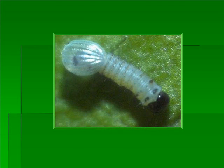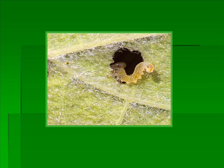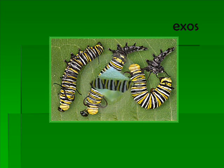Stage two is the larva stage. The larva hatches from the egg. Butterfly larva are called caterpillars. Caterpillars spend most of their time eating. Once they hatch, they eat their egg first. Butterflies do all of their growing when they're caterpillars, and food gives them the energy and body-building materials they need.